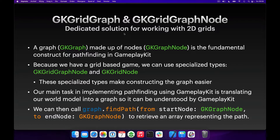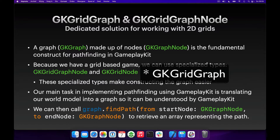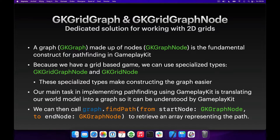The basic constructs in the GameplayKit pathfinder solution are using a graph — represented by a GKGraph instance — and nodes, which are instances of GKGraphNode. These describe the world in terms of all the known places, called nodes, and where you can go from one node to another, which are the connections between nodes. Together those make up a graph. Because we have a grid-based game, we can use specialized types that make constructing the graph easier. Our main task is translating our world model into a graph that GameplayKit can understand, and once we've done that, we can call the findPath function to retrieve an array representing the actual path.